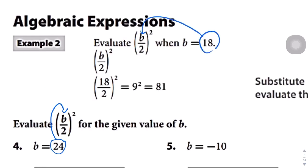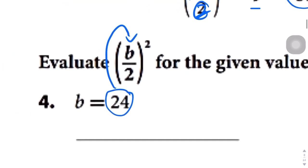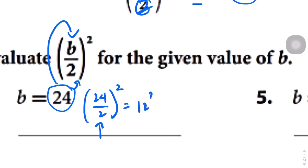Let me go through the example first: b equals 18, so we plug that in. 18 divided by 2 squared — 18 divided by 2 is 9, and then you square that: 9 squared is 81. Now for the question: we're going to plug 24 into this thing. 24 over 2 squared — 24 divided by 2 is 12, and then 12 squared is 144. It seems a little arbitrary, but it'll make sense when we get to the part where we're actually completing the square.